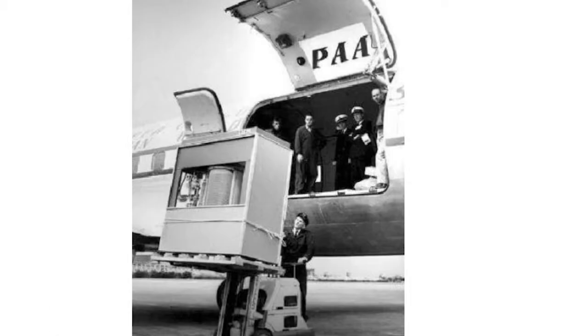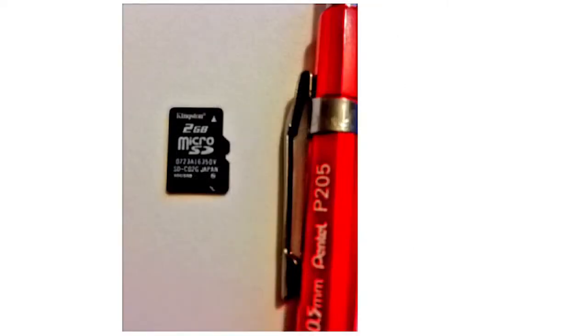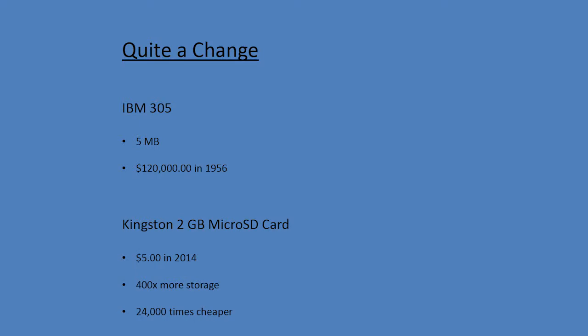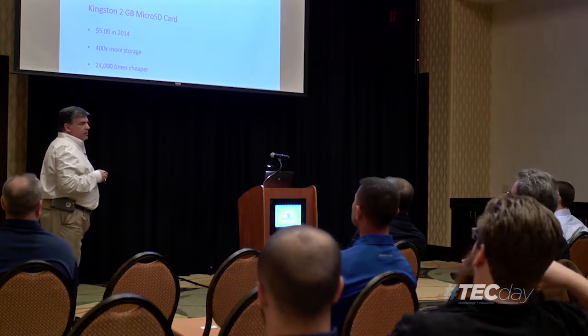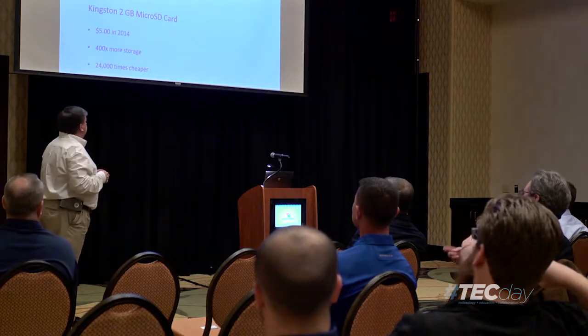It was very portable, easy to move — you just had to have a forklift. You could put it on a plane and take it wherever you needed to fly. And this is not even state-of-the-art anymore. Compare the bulk and weight of that device to a two-gigabyte micro SD card, which is about the size of your little pinky nail. In 56 years, you went from five megs costing $120,000 to a two-gig micro SD card for five bucks — 400 times more storage and 24,000 times cheaper. Sandisk now has a 200-gig micro SD card. That's how fast the technology has changed and how much more efficient it's become.